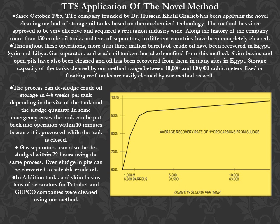The process can desludge crude oil storage in 4 to 6 weeks per tank depending on the size of the tank and the sludge quantity. In emergency cases, the tank can be put back into operation within 10 minutes because it is processed while the tank is closed. Gas separators can also be desludged within 72 hours. Even sludge in pits can be converted to sellable crude oil. Tanks, skim basins, and tens of separators for Petrobel and GUPCO companies were cleaned using this method.